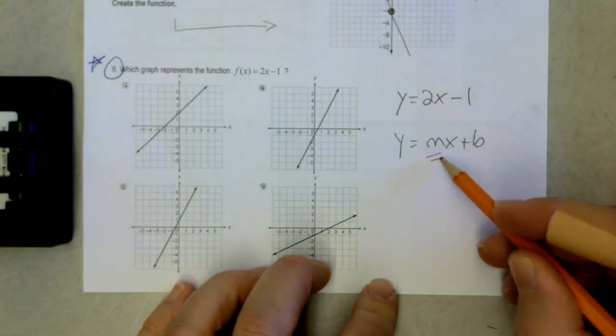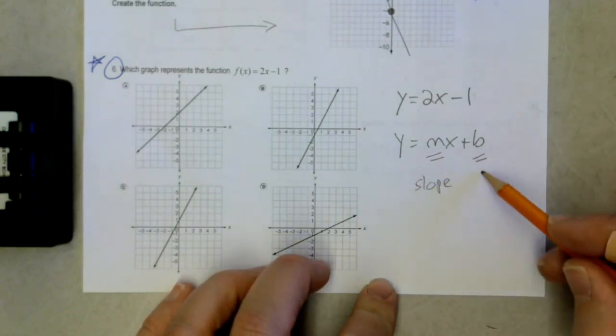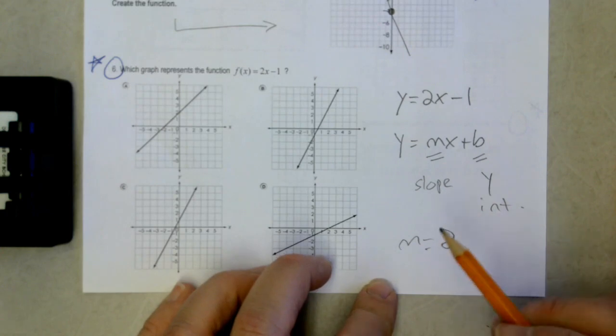So in slope-intercept form, the m value is the slope of my line, and that b value right there represents the y-intercept. So my slope is going to be 2 based on this equation, and my y-intercept is going to be negative 1.